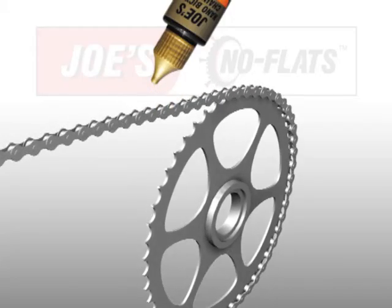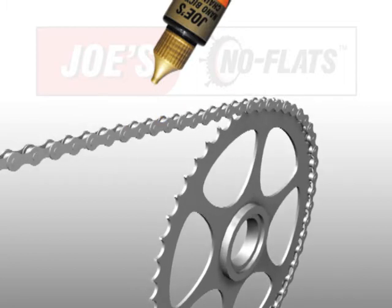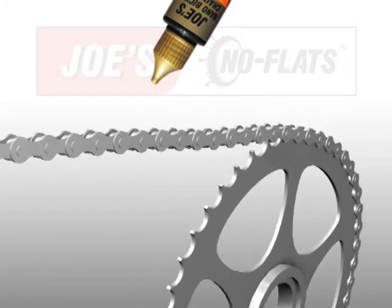Apply one drop of Joe's Nano Bicycle Chain Lube to each chain link while slowly rotating the chain.